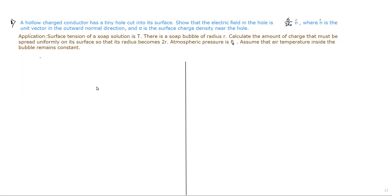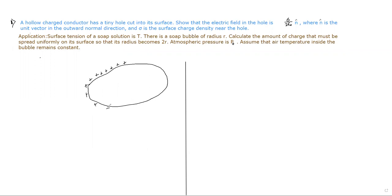In today's class, we shall be solving a problem on electrostatic pressure, and for that we are considering a part of a hollow conductor. This is a hollow conductor and this conductor is charged. We want to find the electrostatic pressure on the surface of this conductor.